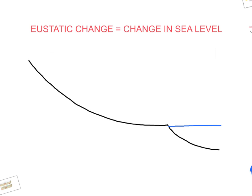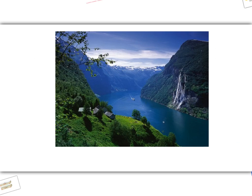The second main cause of rejuvenation is eustatic change. This is a change of sea level — it can either be a rise or a fall. In warmer periods, there is less ice held in valley glaciers and at the poles, and the water is warmer, so it expands and sea levels rise.